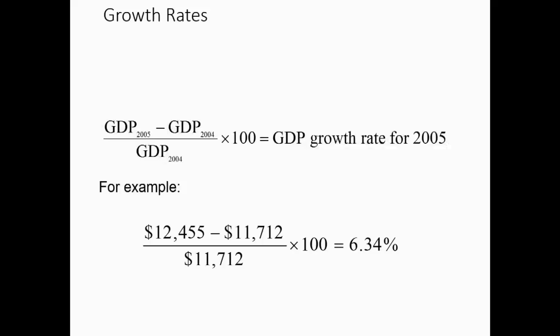To calculate GDP growth for the year 2005 — how much more we produced in 2005 than in 2004 — take GDP in 2005, subtract GDP in 2004 (the level difference), then divide by 2004 GDP to get the percentage increase. Multiply by 100 to get the percentage GDP growth. For example, if GDP in 2005 is $12,455 billion and in 2004 it's $11,712 billion, nominal GDP growth comes out to about 6.34%.